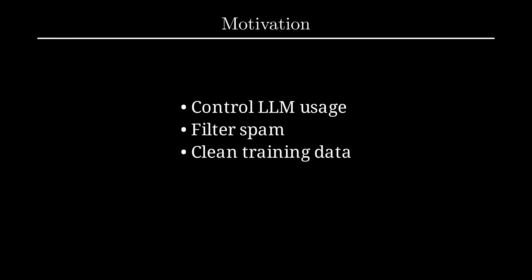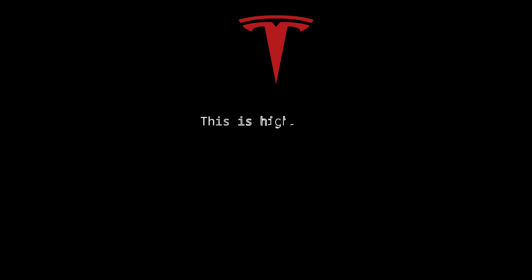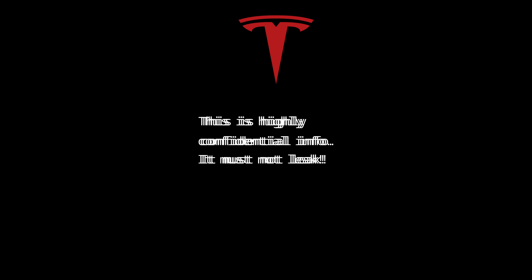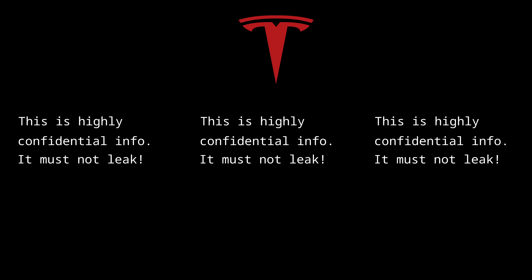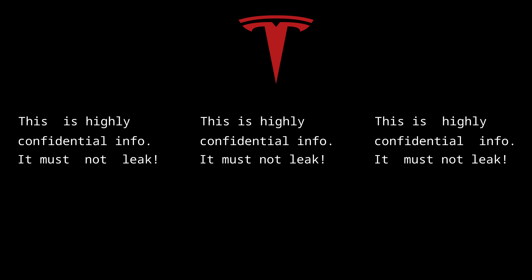Some companies go to great lengths to protect classified information from leaking. Still, from time to time something slips through. If each employee has received the information with a distinct watermark, it can be traced which employee was the leaker. There is a famous story from Tesla where some employees got sent an important confidential email. Every employee received a slightly different one, with each word being separated by either one or two spaces, giving it a distinct signature. When the letter was made public, the leaker could be identified — or at least that's how the story goes.